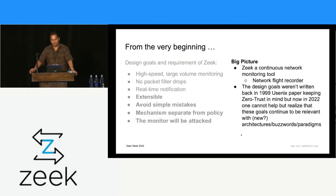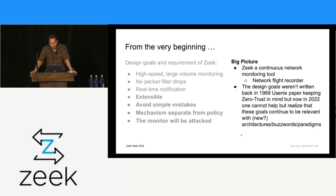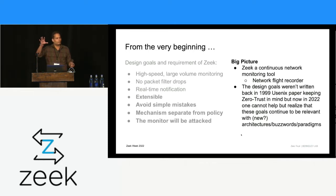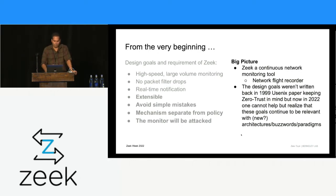The big picture is that Zeek is a continuous network monitoring tool. The design goals Vern originally wrote in 1999 were not keeping zero trust in mind, but these goals are still relevant in 2022. When you think about it — all requests originate from untrusted sources, everybody should be authenticated, data should be vetted with various attributes, roles, and mechanisms — it starts resonating a little bit more.